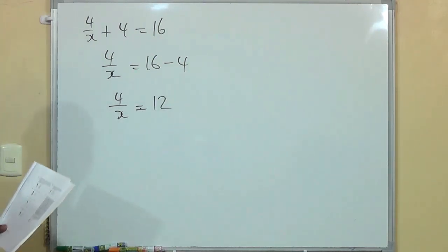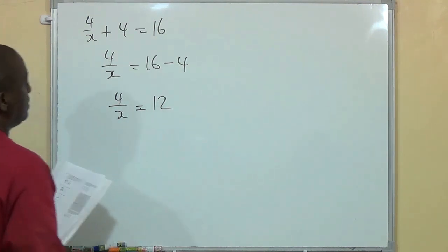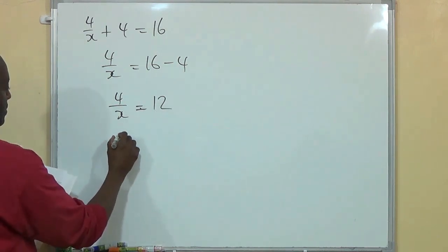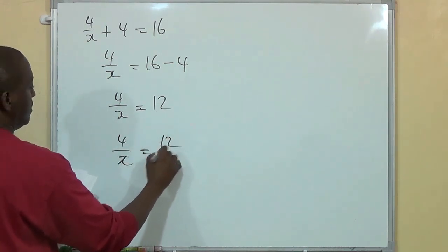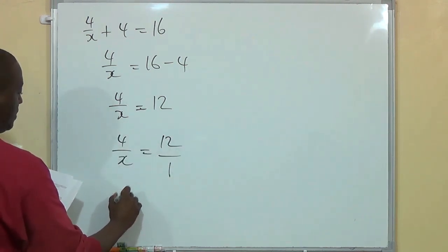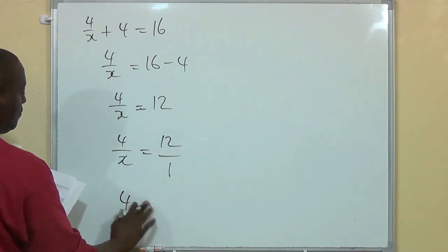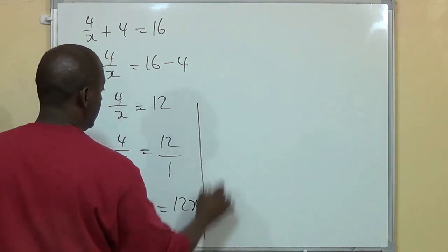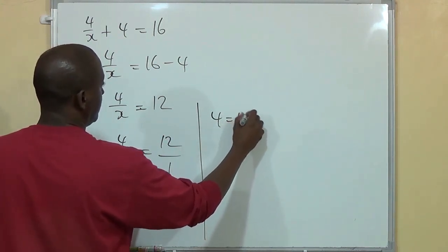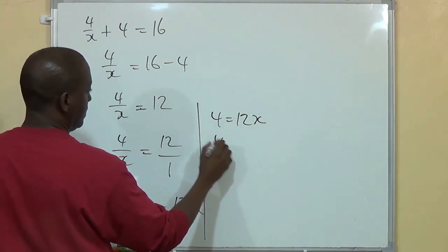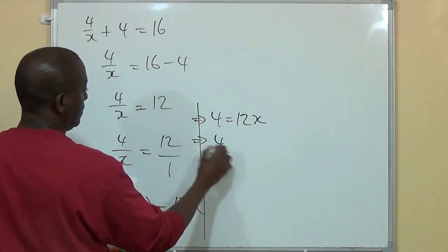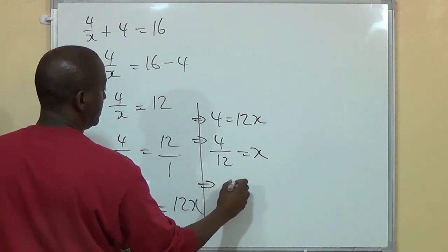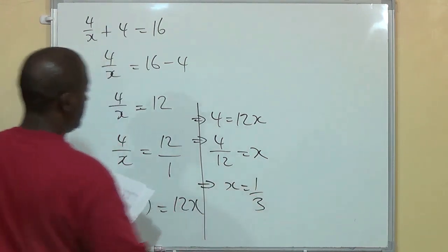Now, if 4 over x is equal to 12, then there are a couple ways you can approach this. One is by cross-multiplying. So you see that 4 over x is equal to 12 over 1, and then you cross-multiply. You'll get 4 by 1 is equal to 12x. So you'll get 4 is equal to 12x. In which case, 4 over 12 is equal to x. 4 over 12 is one third. Therefore, x is equal to one third.